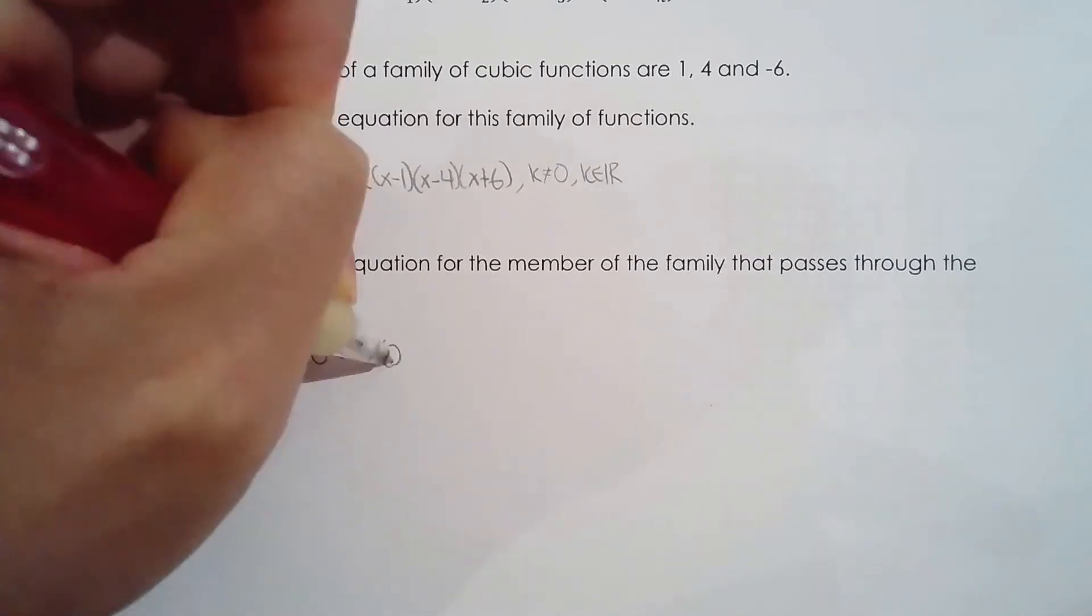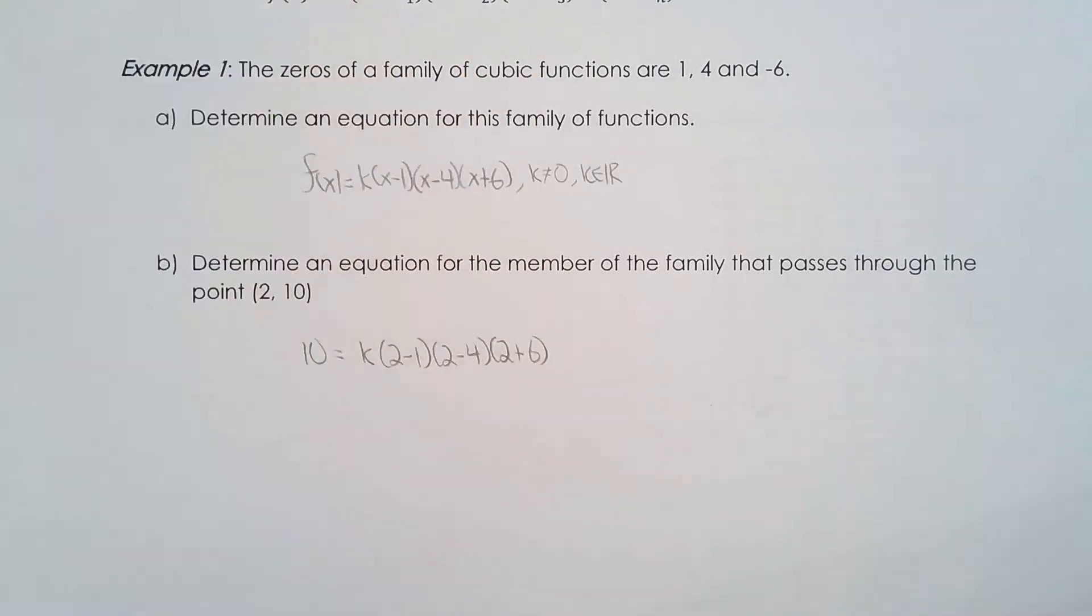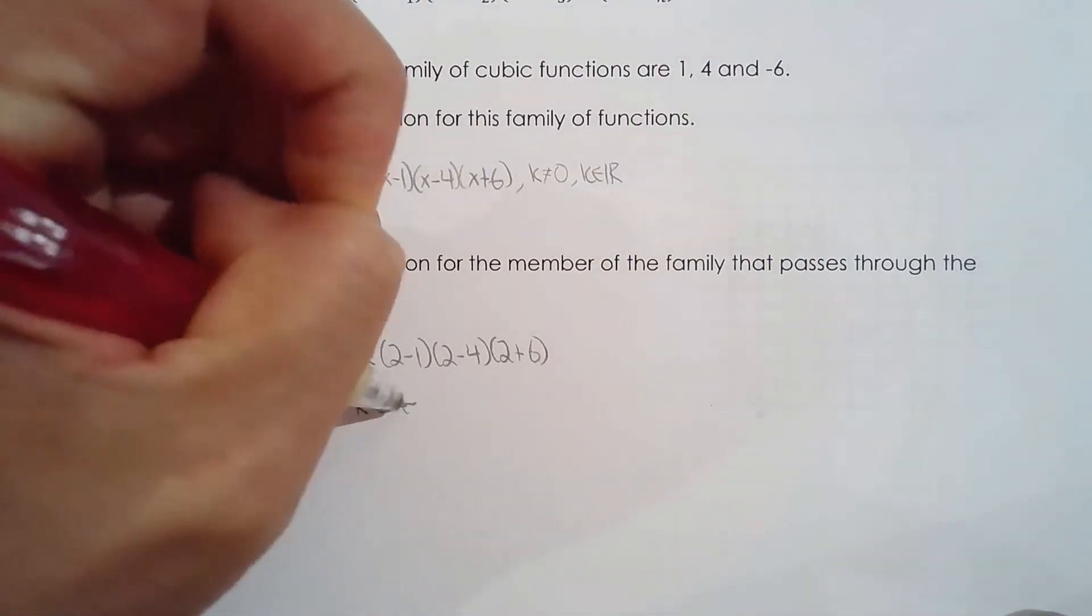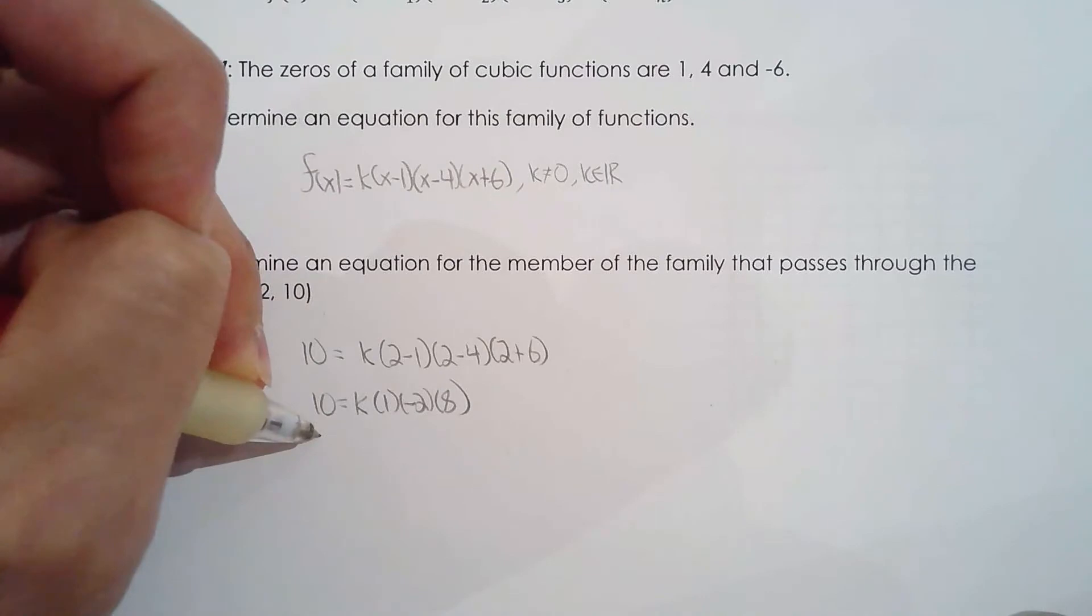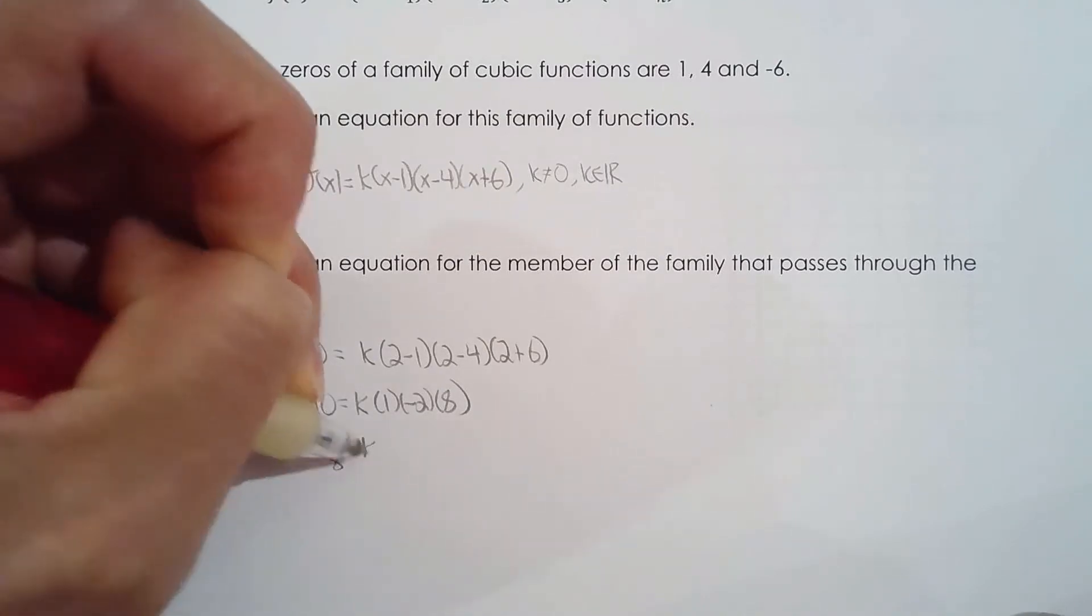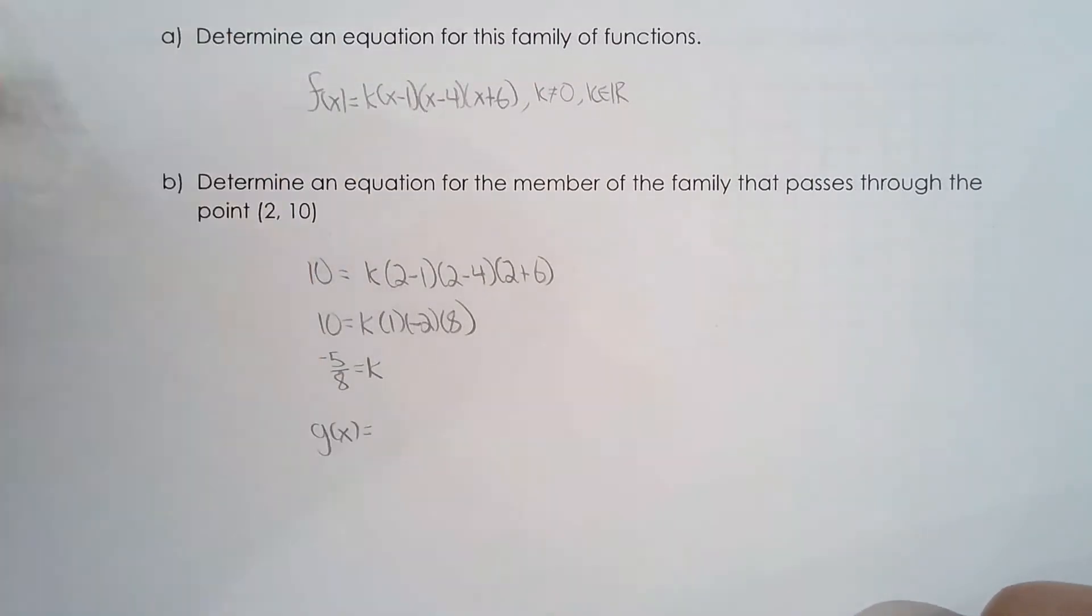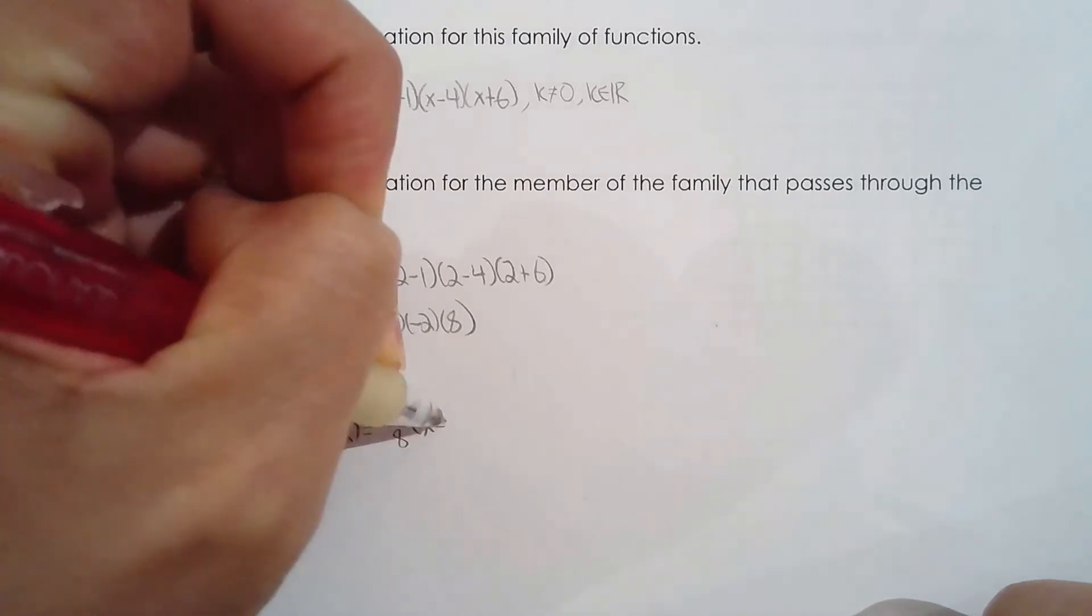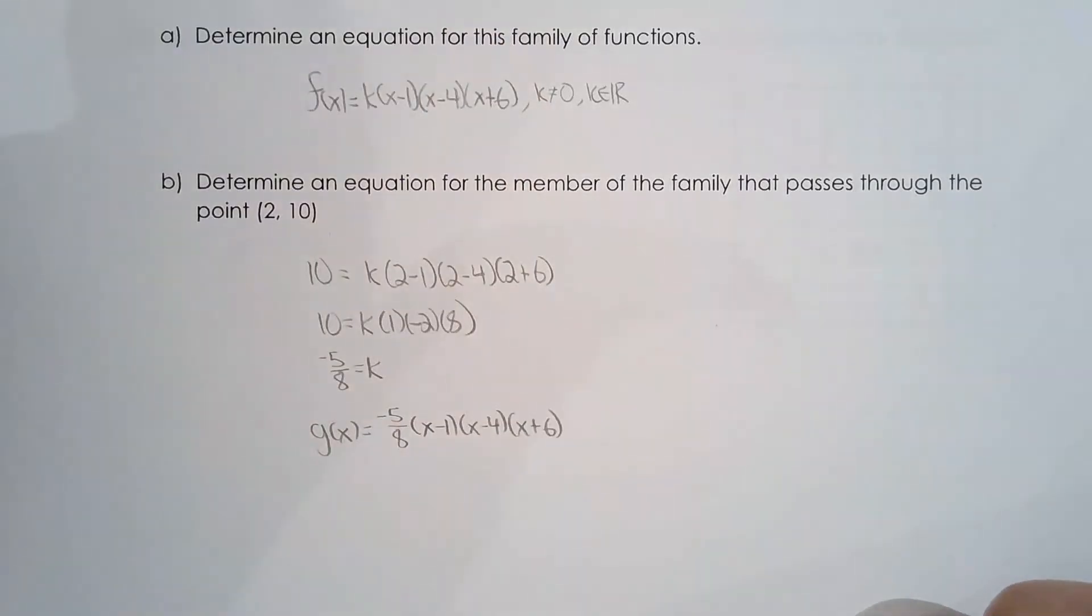So let's see. Okay so two minus one, two minus four, two plus six. This is going to be one, negative two, and four. So you know what I'll take my time. And that's going to be negative 16. Divide both sides by negative 16. So that's going to be negative five eighths. All right so let's solve for k which will now enable me to write the equation for that particular member of the family of cubic functions.